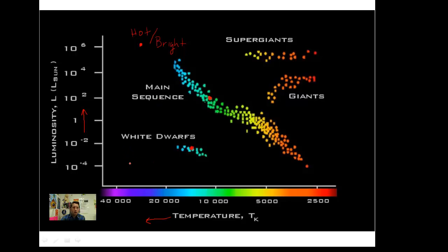Let's move down. It's still hot down here, right? We're looking at 20,000 to 40,000 Kelvin. But what about their luminosity? Down here is not very bright. This is a dim star. Hot and dim for the white dwarfs.